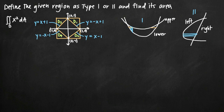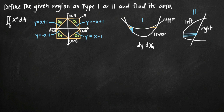Sometimes, depending on the kind of region, it's possible to treat it as either a type 1 or a type 2 region. The regions d sub 1, 2, 3, and 4 in this problem can be treated either way. Type 1 regions are associated with integrating first with respect to y, then with respect to x. Type 2 regions are associated with the opposite order — integrating first with respect to x, then with respect to y.